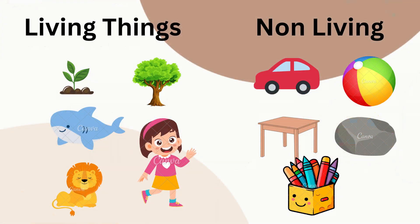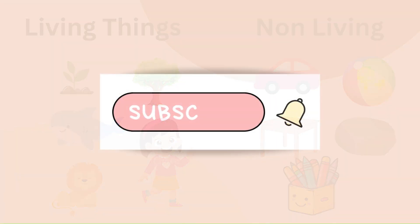In summary, living things have life — they grow, reproduce, and respond to their surroundings, while non-living things do not have these characteristics.